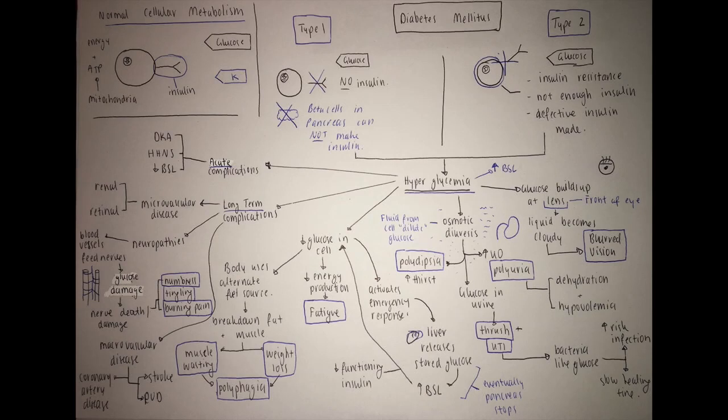Diabetes mellitus. You can see at the top left corner, you've got normal cellular metabolism. We've got the cell, insulin, and glucose. Glucose is floating around in your bloodstream and you want it to get across the cellular membrane into the cell to produce energy. Insulin is a hormone that facilitates this. Insulin is a key to open the door for glucose so that glucose can travel from the blood into the cell.